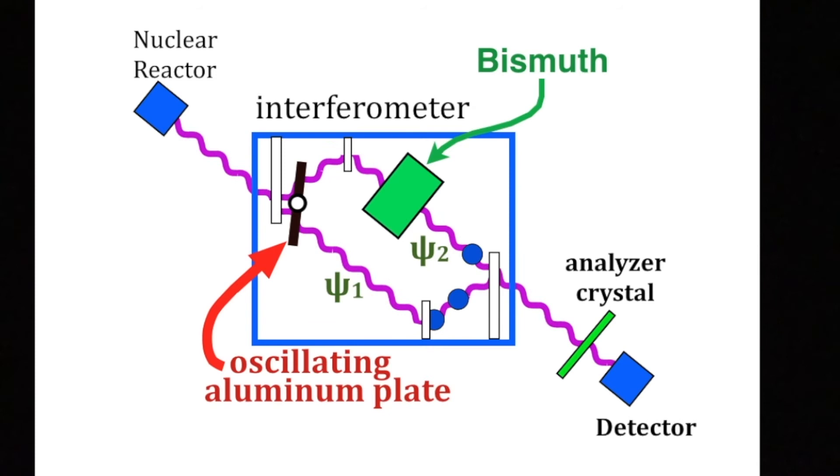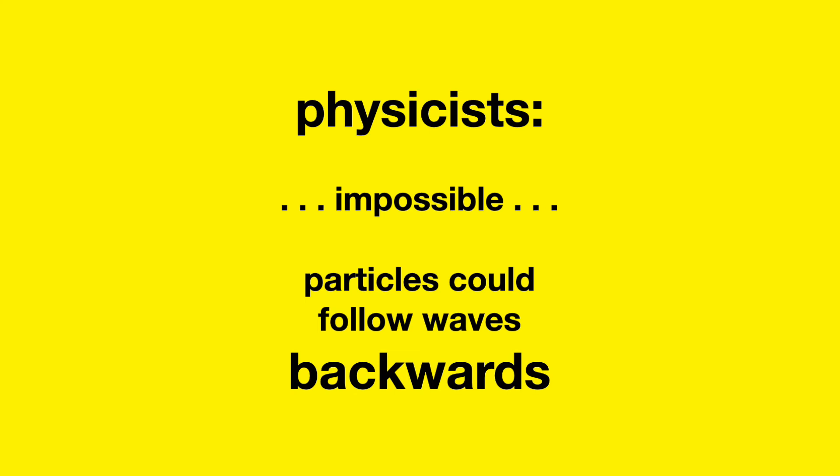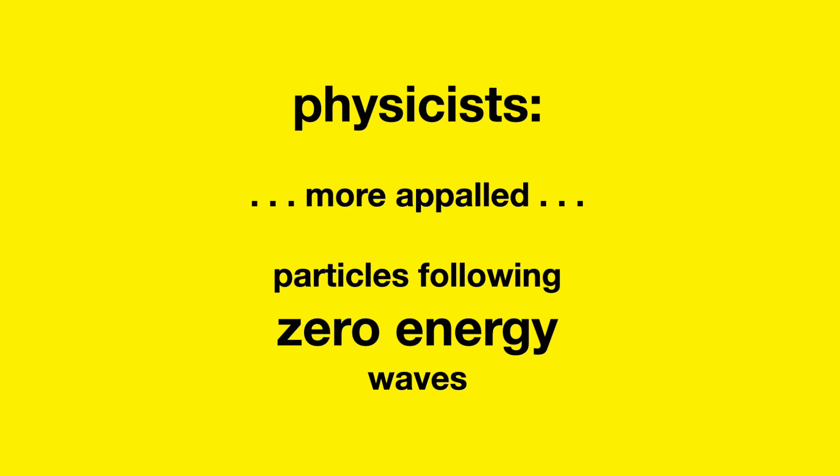We see no other possible explanation of these data than to say that there are zero-energy waves going backwards and that the neutrons follow the waves in the reverse direction. I have spoken to many audiences of physicists who, despite the evidence, find it impossible to understand how particles could follow waves backwards, but they are even more appalled at the idea of particles following zero-energy waves.